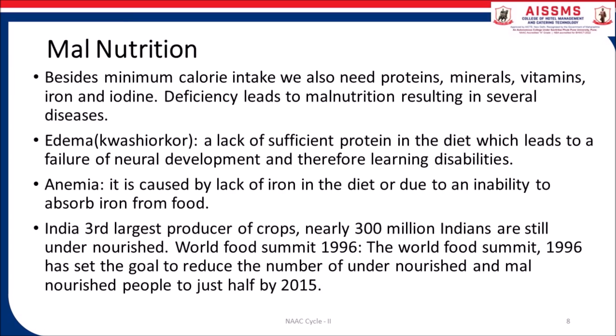India is the third largest producer of crops. Nearly 300 million Indians are still undernourished. The World Food Summit in 1996 set the goal to reduce the number of undernourished and malnourished people to just half by 2015.